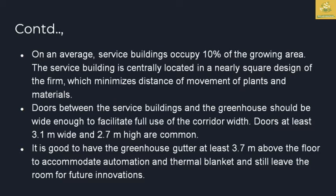On average, the service building occupies 10 percent of the growing area and is centrally located in a nearly square design to minimize the movement of plants and materials. Doors between the service building and the greenhouse should be wide enough to facilitate full use of corridor widths — at least 3.1 meters wide and 2.7 meters in height. It is good to have a greenhouse gutter at least 3.7 meters above the floor to accommodate automation and thermal blankets, leaving room for future innovations.